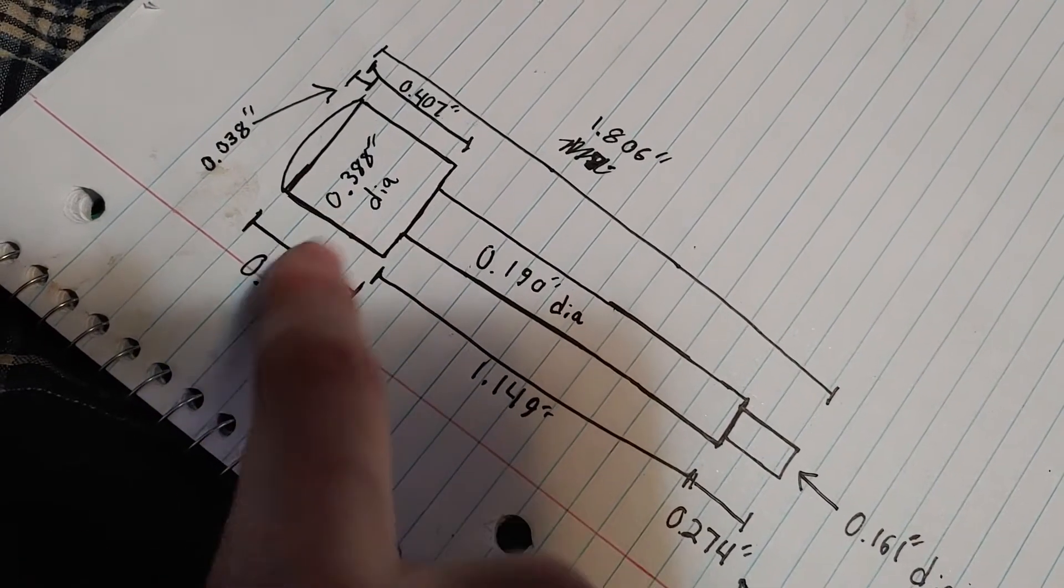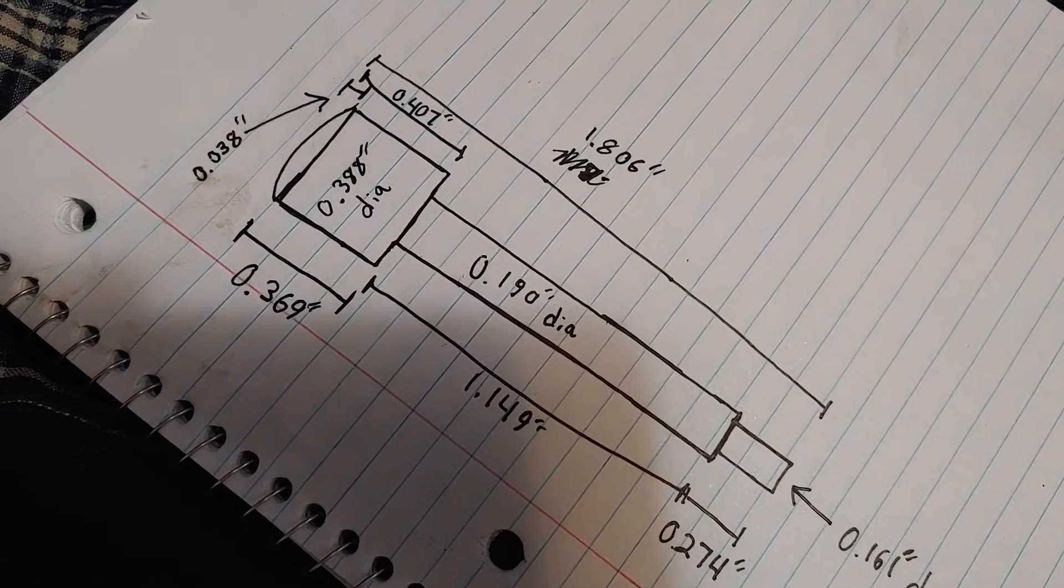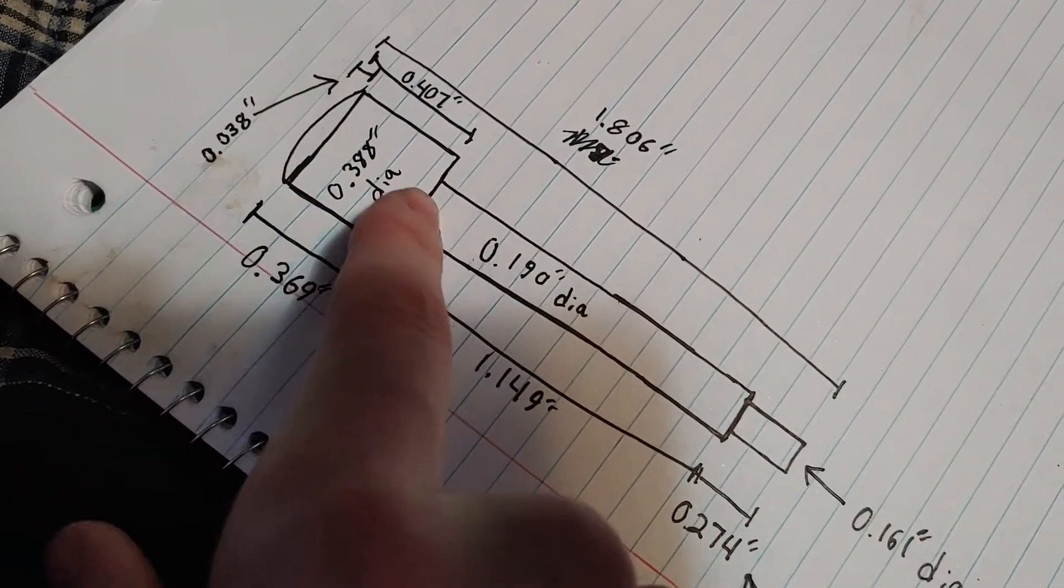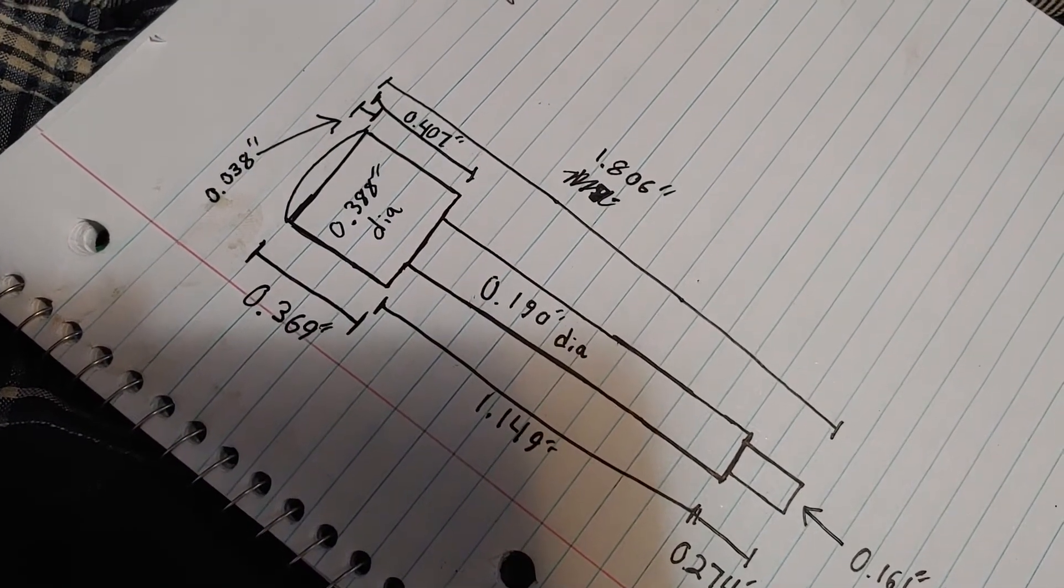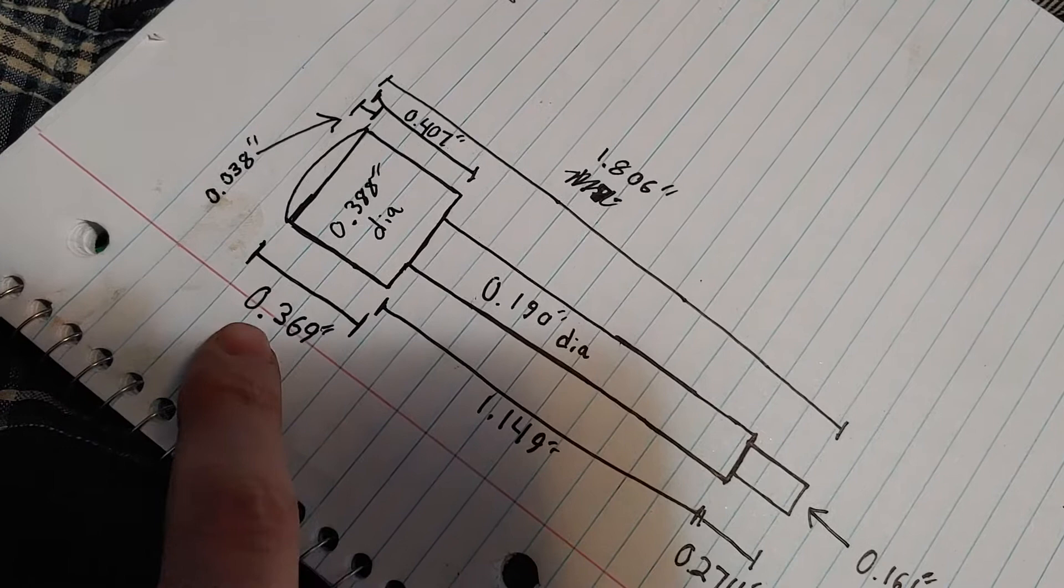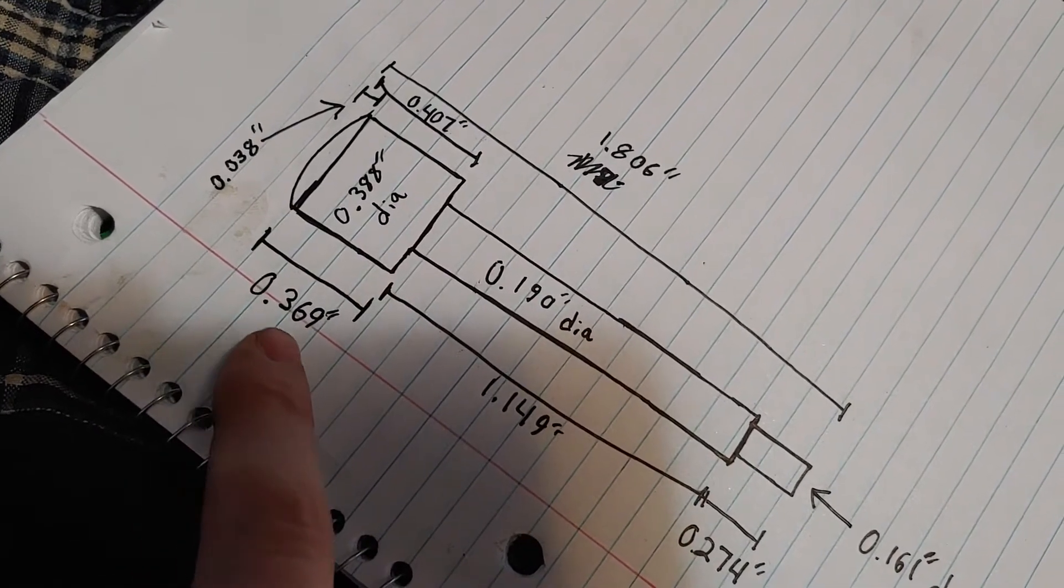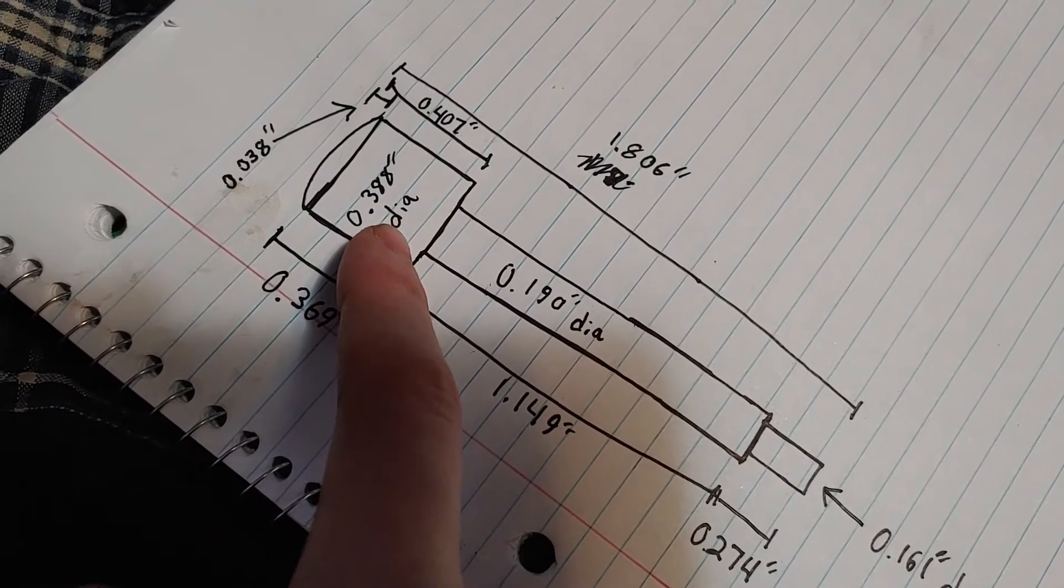This section of the pin is 0.388 inches in diameter. The height from the very top of the pin to that shelf are 0.407 inches. This section to this section is 0.369 inches. As I said, 0.388 diameter up top.